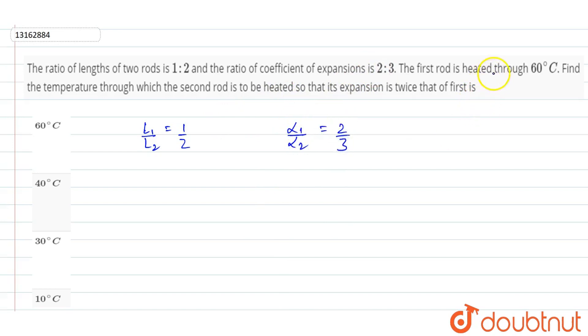Now the first rod is heated through 60 degree Celsius, so it is getting heated through 60 degree Celsius. It means that del T1 is 60 degree Celsius. And we need to find the temperature through which the second rod is to be heated so that its expansion, del L2, the expansion of second rod, is twice that of del L1.